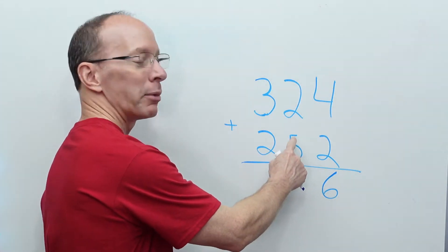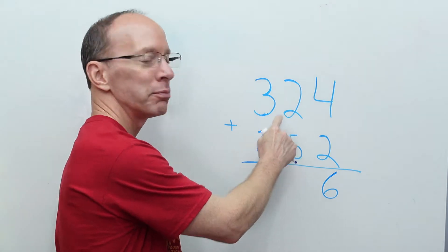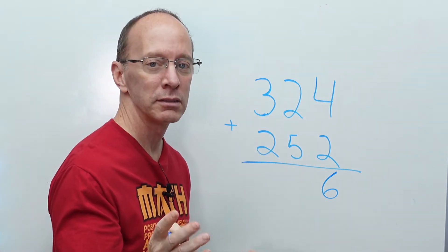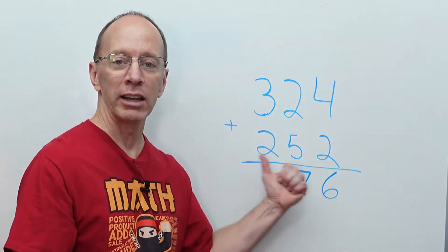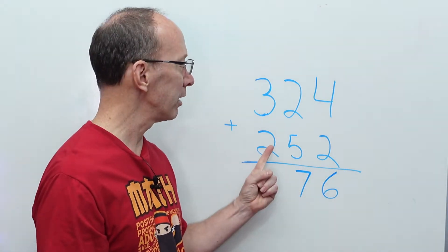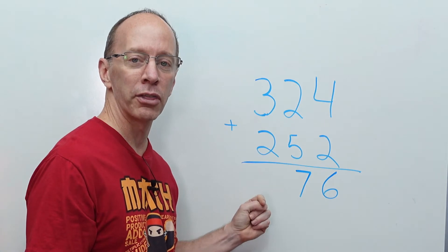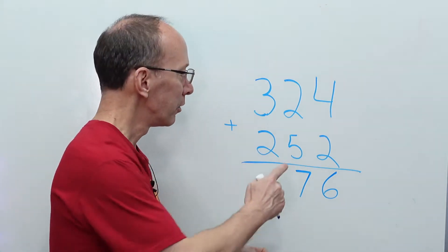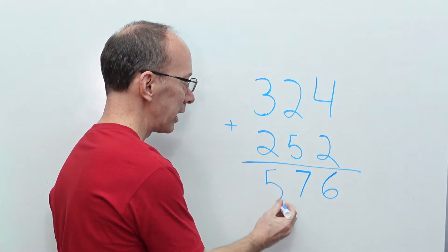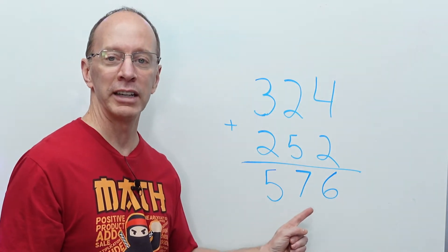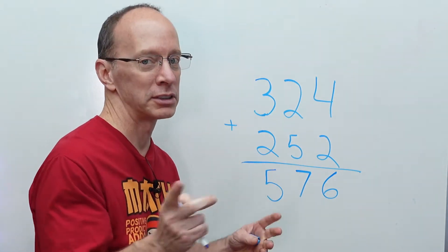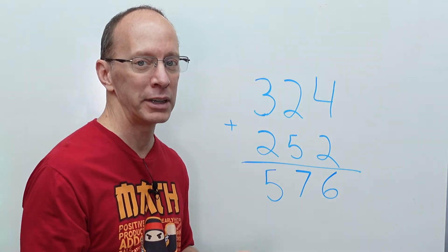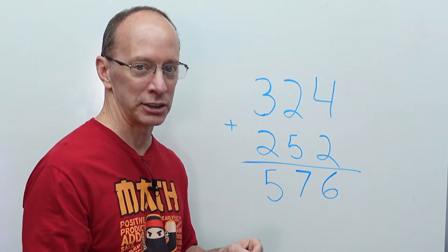All right, next step. Add the tens. 2 plus 5. What is it? 7. 7 sent from heaven. Now, let's move over to the hundreds. What do we have? 3 plus 2. 5. Put that right here. 576. This problem, we did not have to regroup. But stay tuned. We might have to do a little regrouping in the next problem. Ready to do it? Let's do it!